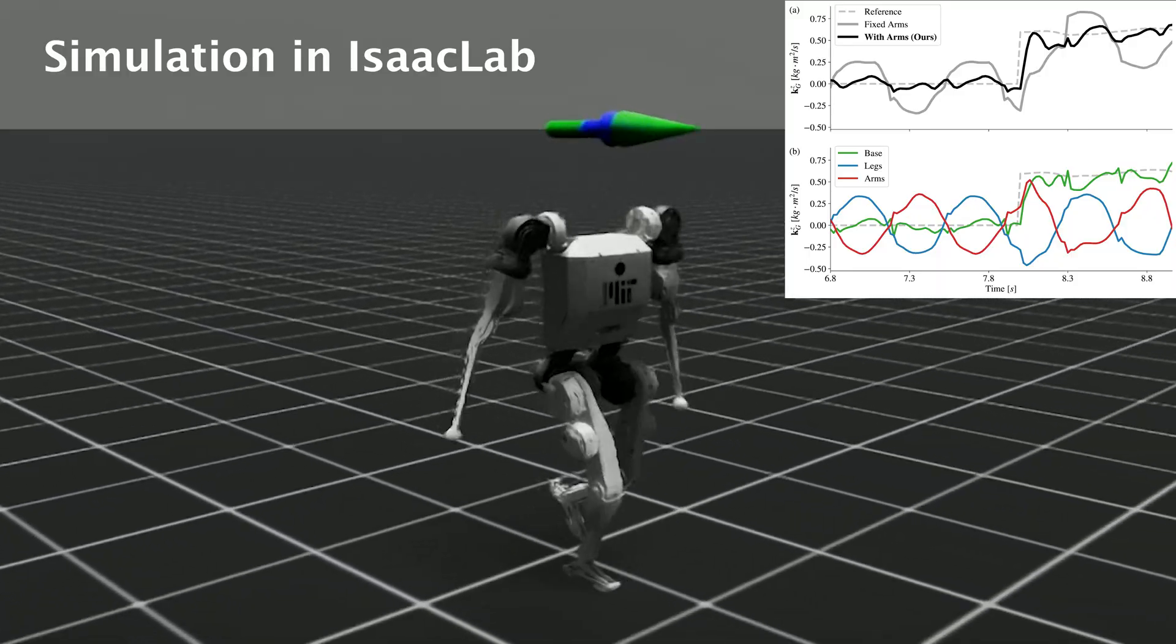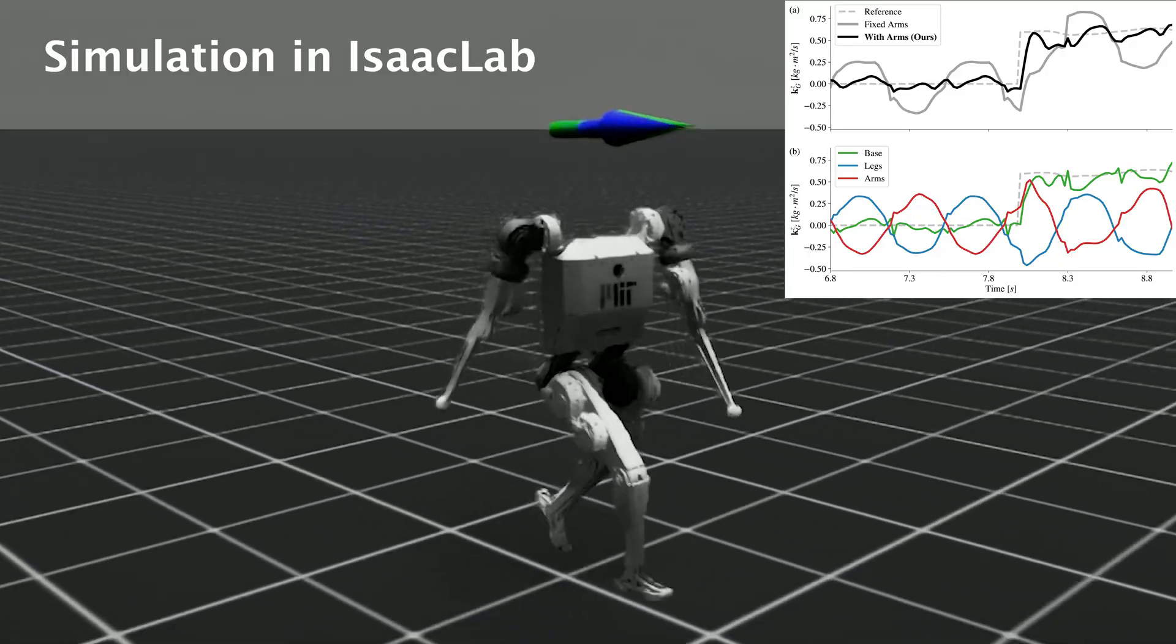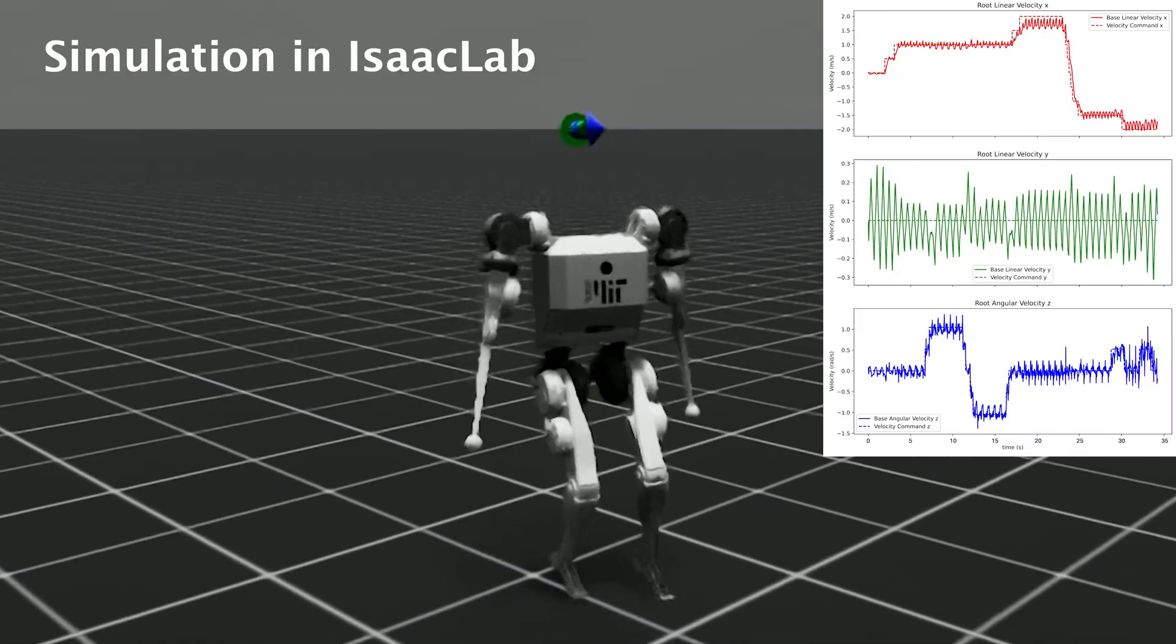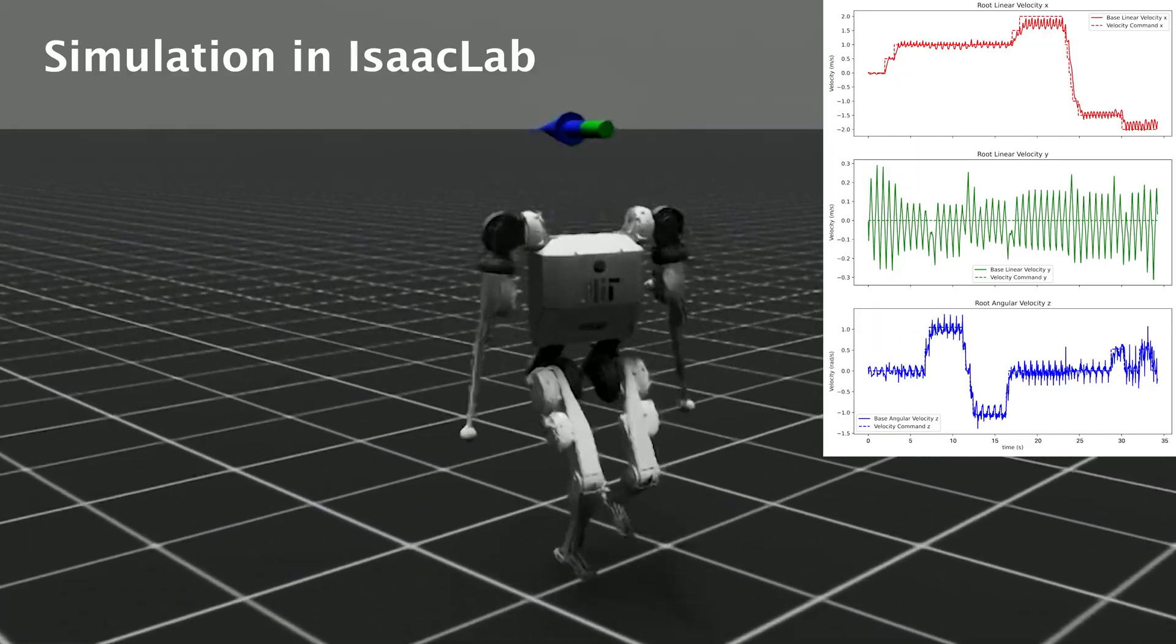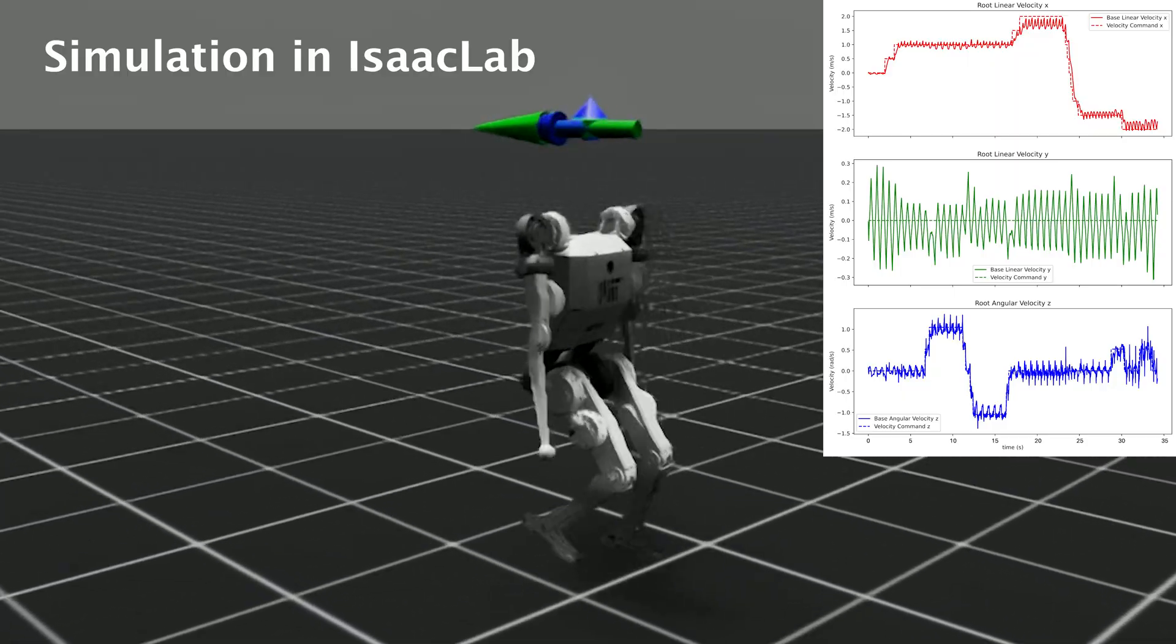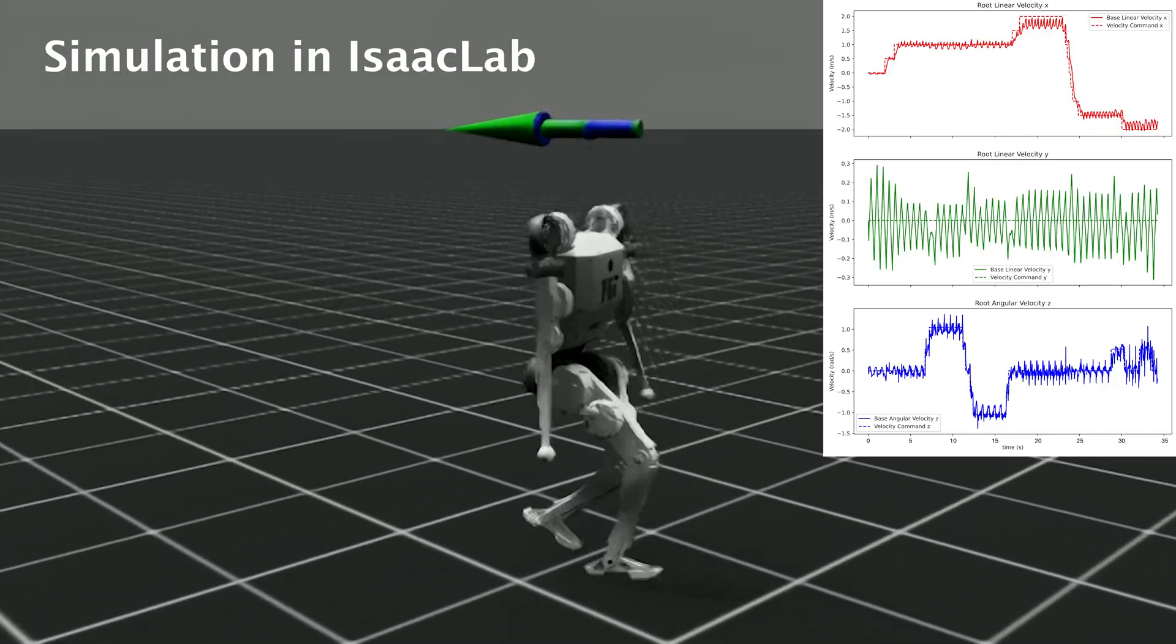For the leg, we include a velocity tracking reward that encourages the base to follow the commanded velocity, and a contact schedule reward to enforce the desired stepping frequency.